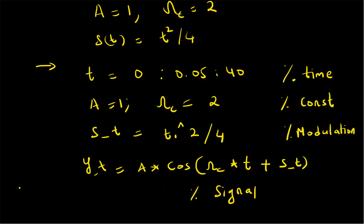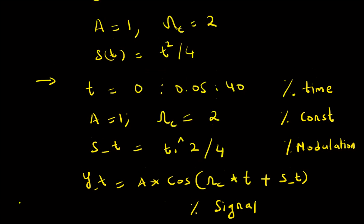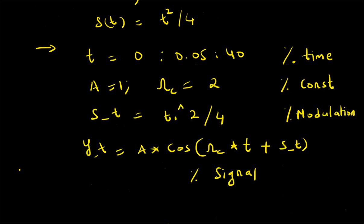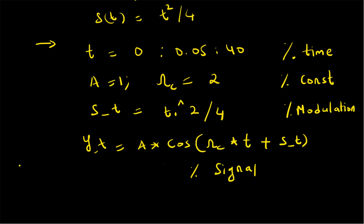To summarize, in this short video we have looked at the plotting of a chirp signal. Specifically, the model is y(t) equal to A times cos of (omega_c * t + s(t)), where A is the amplitude, omega_c is the frequency, and s(t) is the modulation — also called phase modulation or frequency modulation.